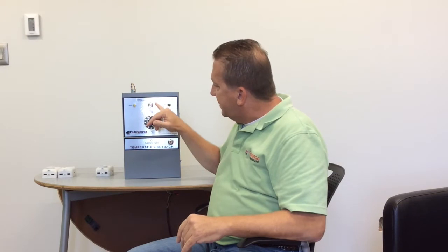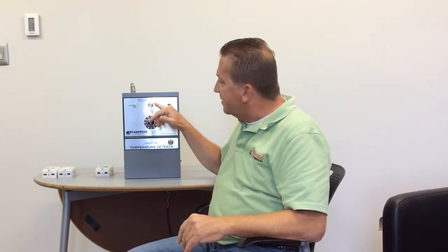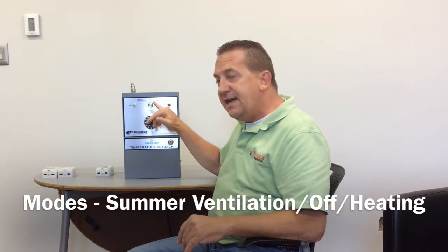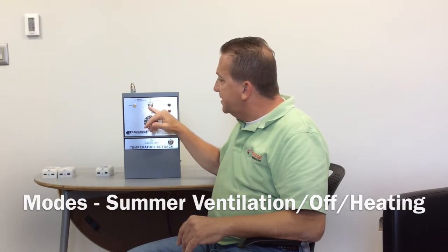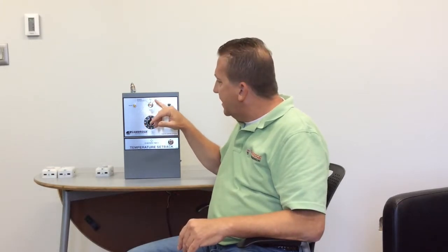There is the mode switch, which is a key lock, which is summer ventilation, off, and heating. Summer ventilation is a continuous mode and the heating is an intermittent mode, typically.